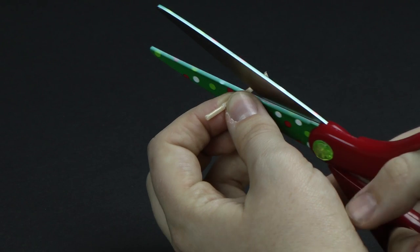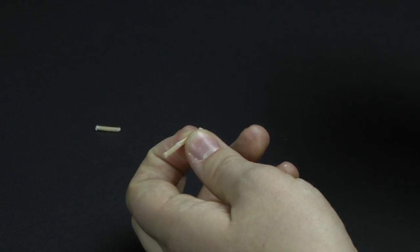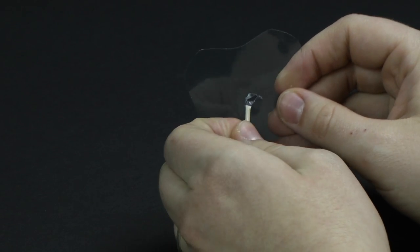Next, cut the wick down to about an inch. Then stick the wick a quarter inch through the hole of the plastic.